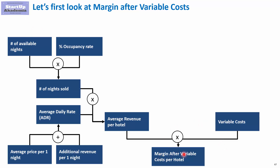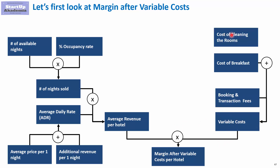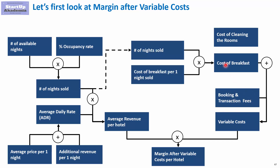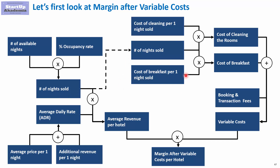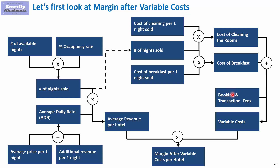In order to get to the margin after variable costs per hotel, we need to model the variable costs. These include: cost of cleaning the rooms, cost of breakfast if we provide it, and booking transaction fees. For breakfast cost, we model it through nights sold and assume a certain cost per night sold. For cleaning cost, we again use nights sold with a cost of cleaning per night sold.